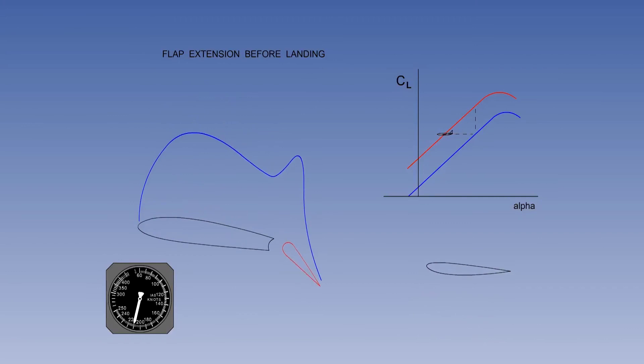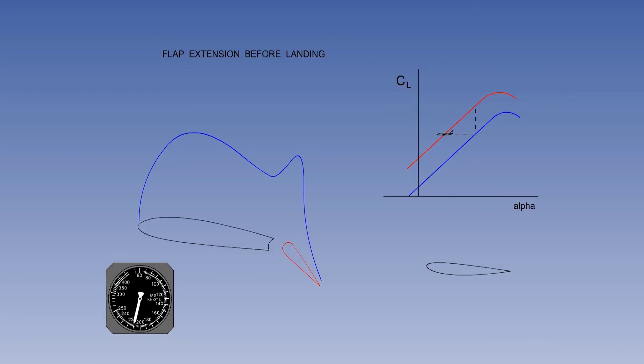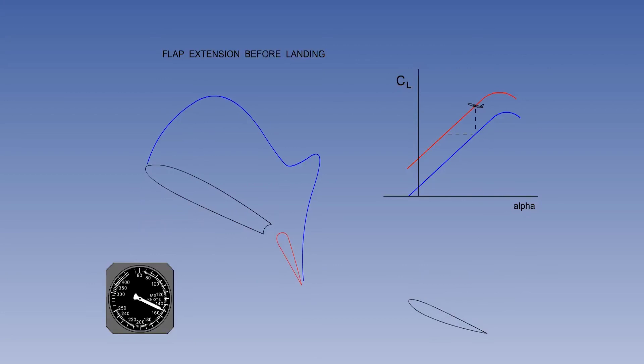As the flaps extend, the pilot must decrease the angle of attack. Just in case the examiners ask you, please note that to maintain level flight at a constant indicated airspeed as the flaps extend, the lift coefficient must remain constant. With the aircraft now on the flaps-down lift curve, the pilot can decrease the indicated airspeed while increasing the angle of attack to keep lift the same as the weight.